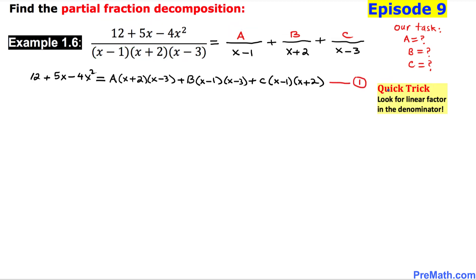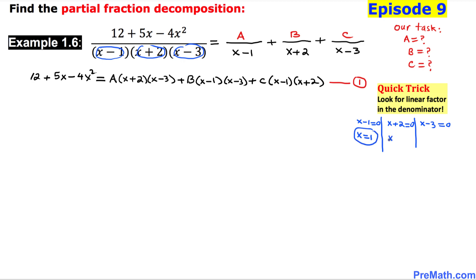Here is our quick trick: look for the linear factors in the denominator. We have x minus 1, x plus 2, and x minus 3. I'm going to set each one equal to zero. So x minus 1 equals zero gives x equals positive 1. x plus 2 equals zero gives x equals negative 2. And x minus 3 equals zero gives x equals positive 3. So we have three x values to work with.